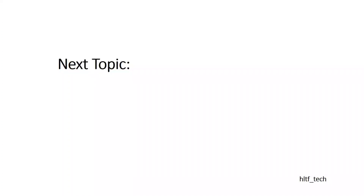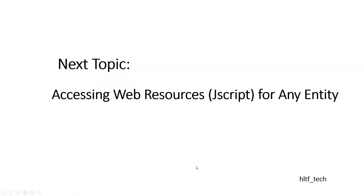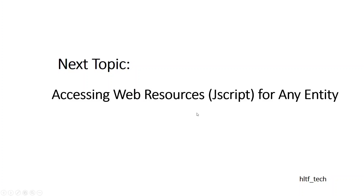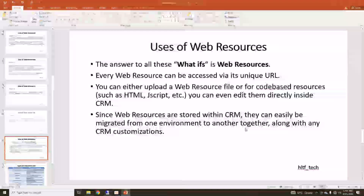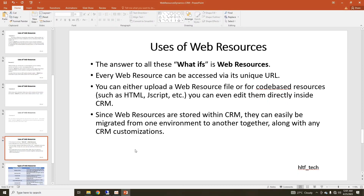So this was all about the current video — what web resources are and why they are used. We talked about different scenarios to give a basic understanding to beginners. Those viewers who have intermediate knowledge of Dynamics must have already understood this content, but I hope some ideas have been clarified for everyone. In the next video, we will cover accessing web resources — we will create a JavaScript file, upload it as a web resource for a Contact entity, and validate that an email must match a standard pattern, giving an error message if it does not. Please subscribe to my channel if you are a new viewer. Thank you all for watching.